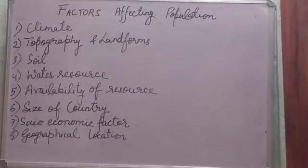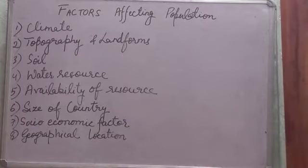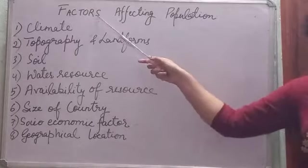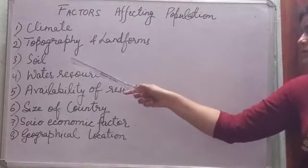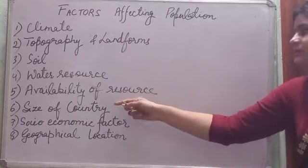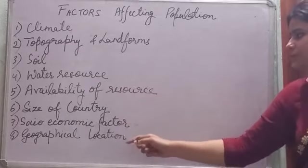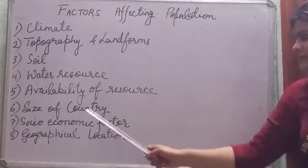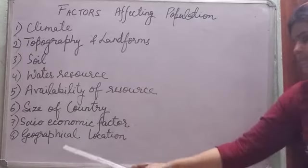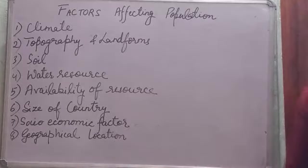There are mainly eight factors affecting population: climate, topography and landforms, soil, water resources, availability of resources, size of the country, socio-economic factors, and geographical location.